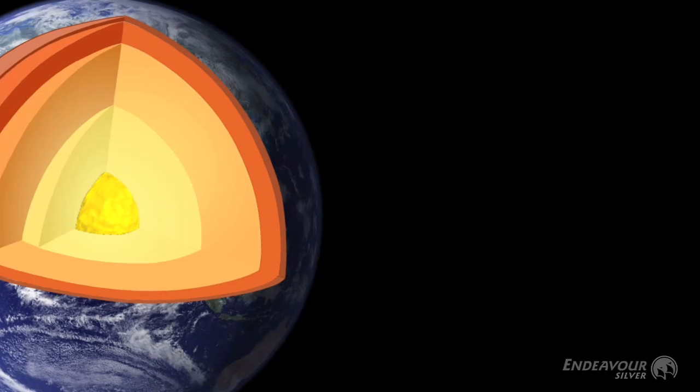The kind of deposit we are looking at is a vein system — a vein system that has low sulfides and is formed close to the Earth's surface. Those veins are formed by essentially hot water coming off magma intrusions deep in the crust. Being heated, it rises up towards the surface, and those hot waters essentially precipitate silver and gold minerals into veins.